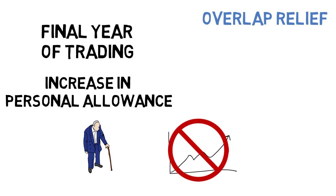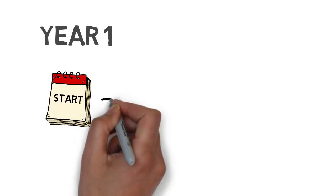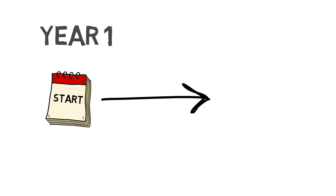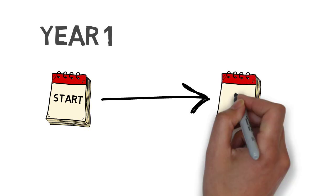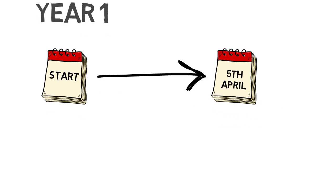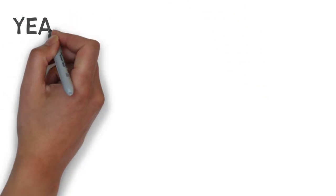To determine the likelihood of having to pay overlap profits, there are a couple of questions that need answering. First, the non-negotiable rule: your first basis period — the trading period for which your first tax return is based — is always from the date that you commence trading until the end of the first tax year, i.e. the 5th of April after you've started.